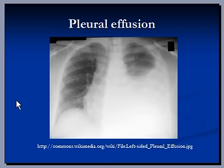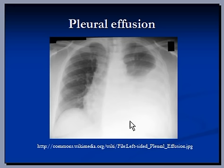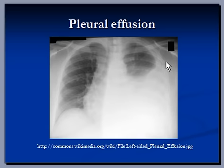This x-ray shows a huge amount of pleural effusion. You cannot see the left heart border. You cannot see the left cardiac diaphragmatic angle. You cannot see the left hemidiaphragm. The left costophrenic angle is not visible. More than half of the left lung is not visible, and there is a gap between the ribcage and pleura — this is a large pleural effusion.